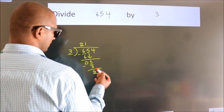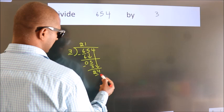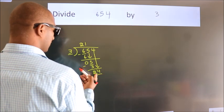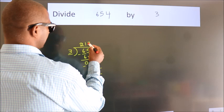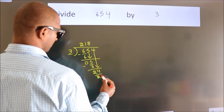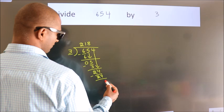After this, bring down the beside number. So, 4 down. We have 24. When do we get 24? In the 3 table, 3 times 8 is 24. Now we subtract and get 0.